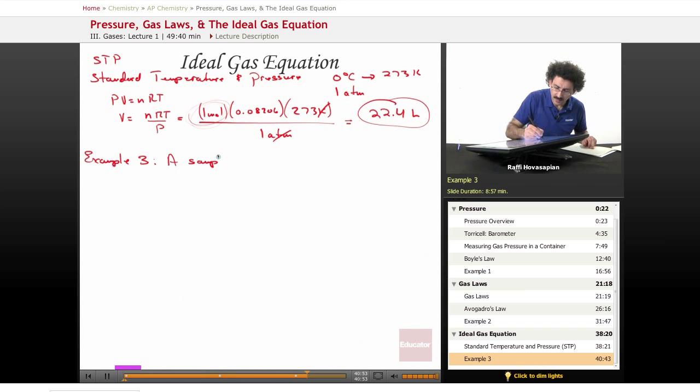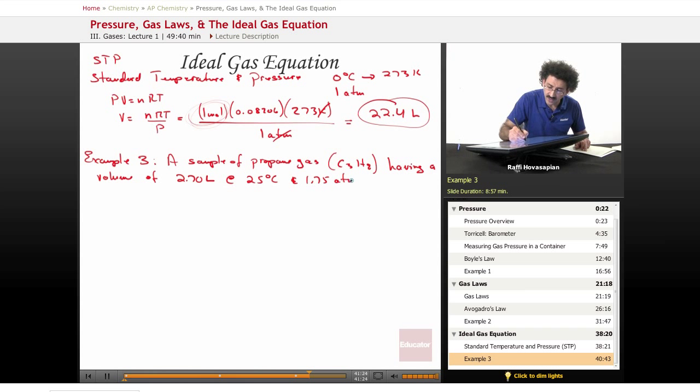A sample of propane gas, C3H8, three carbons, eight hydrogens, having a volume of 2.70 liters at 25 degrees Celsius and 1.75 atm was mixed with O2 gas.